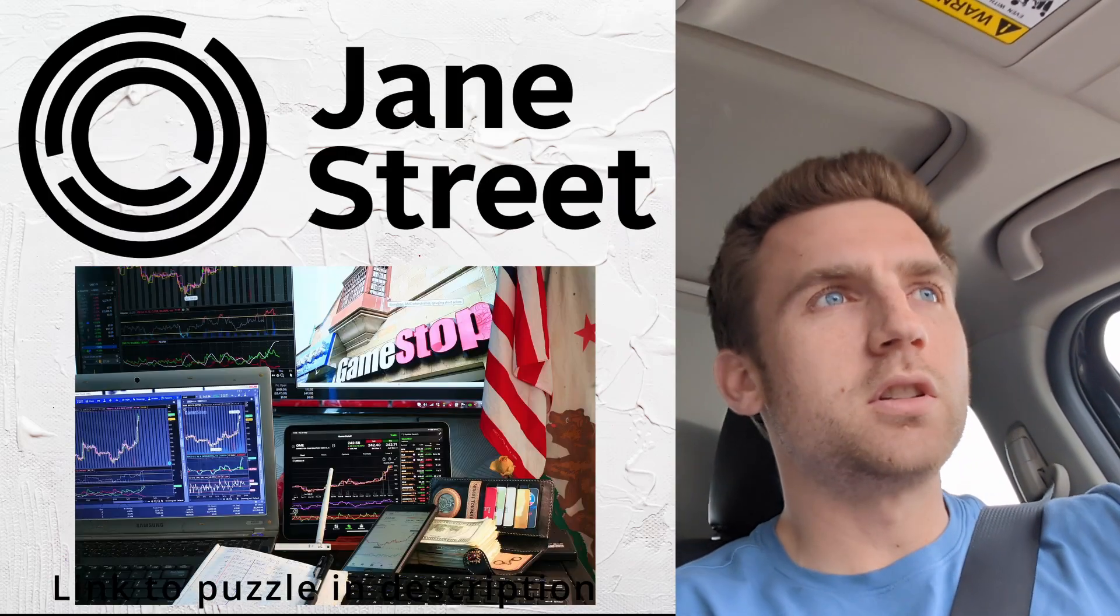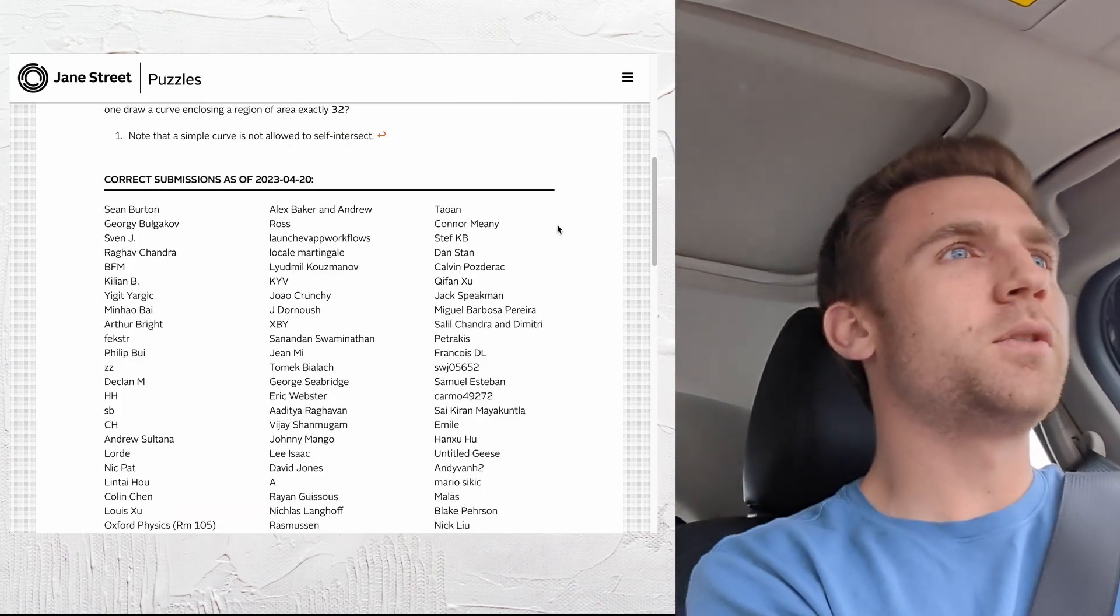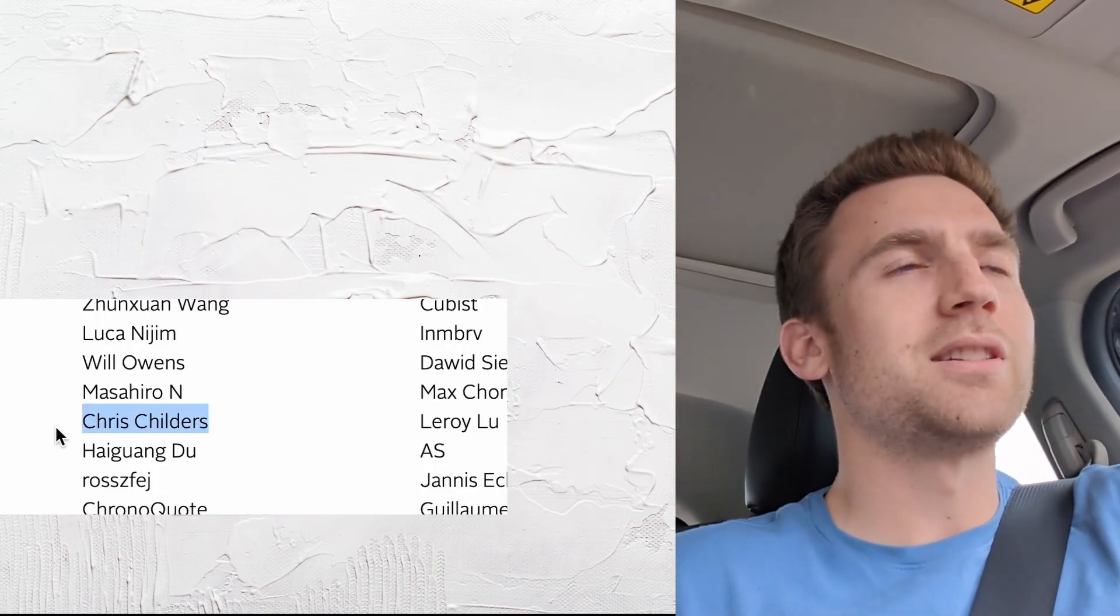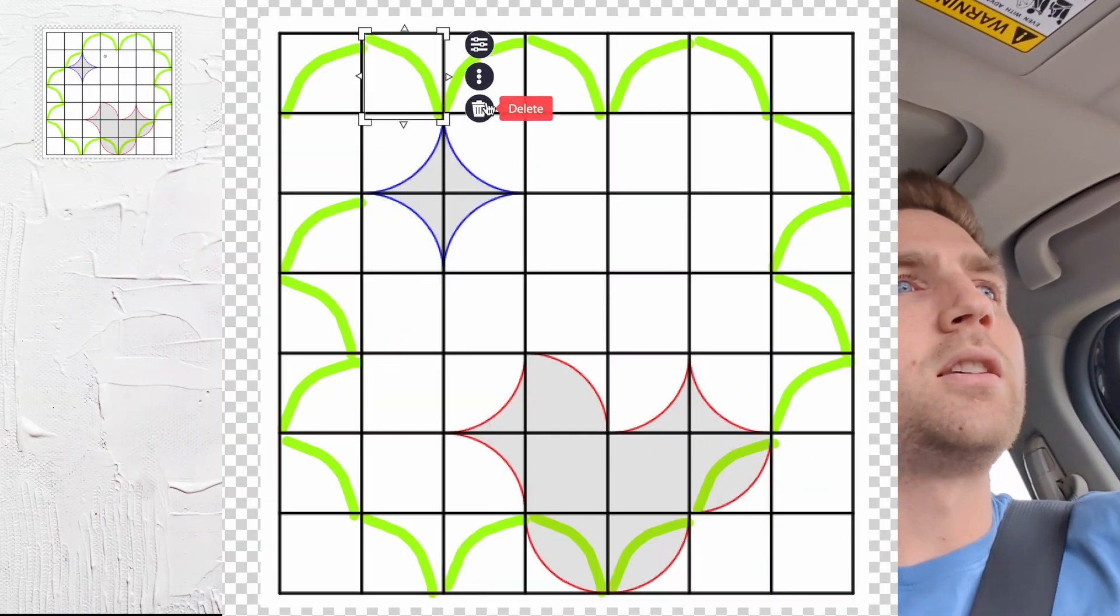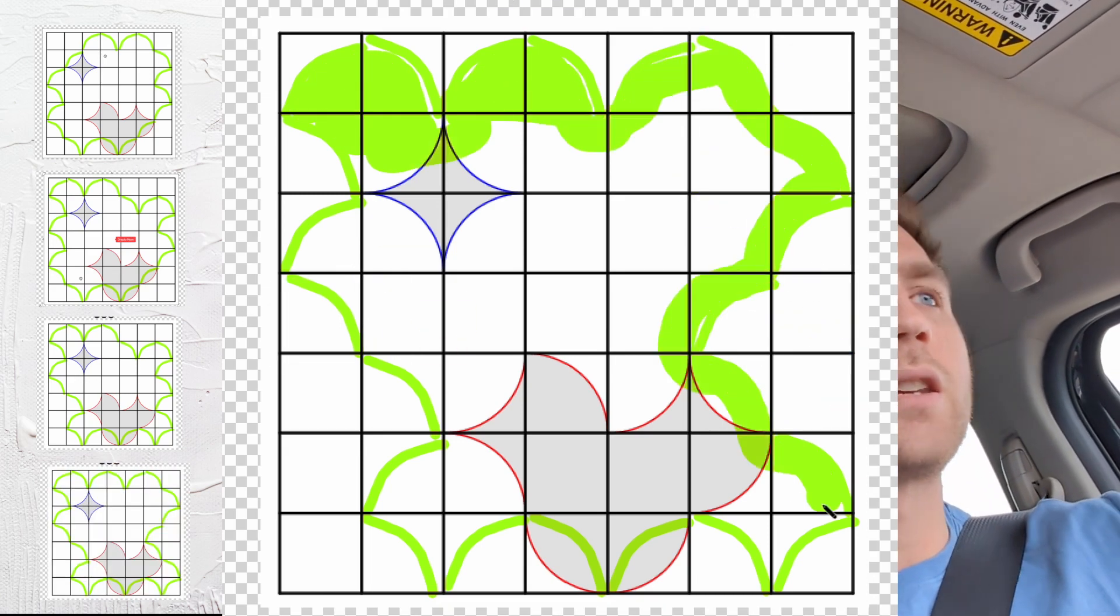Every month, Jane Street, a hedge fund in New York, puts a new puzzle up onto their website. Users have a month to finish it. I'm going to tell you how I solved the problem, and you can go see my name on the leaderboard if you want to. The general question is how many ways can we create a shape with the area of 32 within this 7x7 grid?